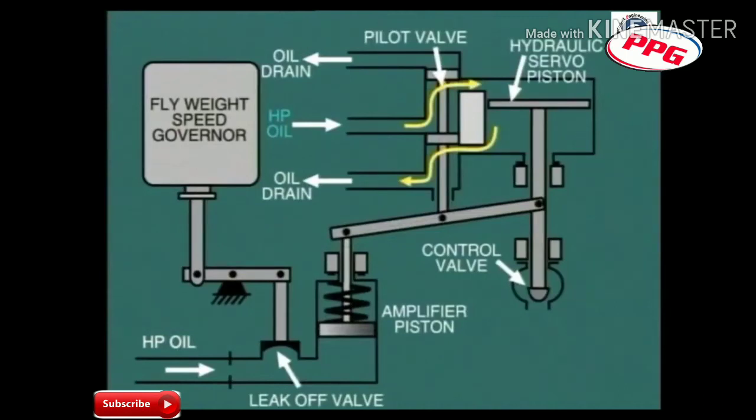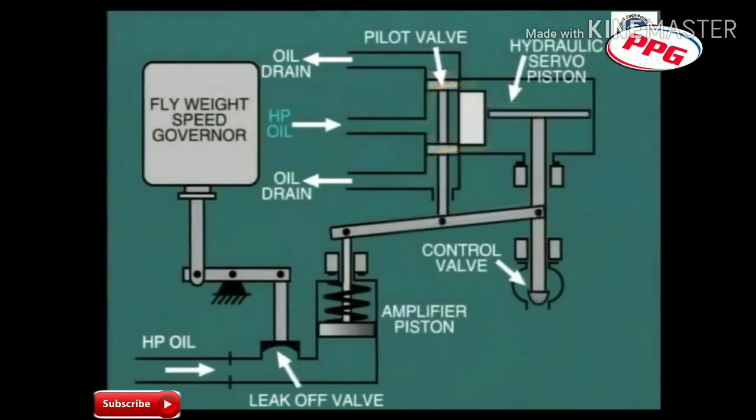At the same time, the pilot valve exposes the space below the piston to the oil drain and returns the oil to the tank. The high-pressure oil above the piston pushes it downward and consequently moves the control valve in the closed direction.